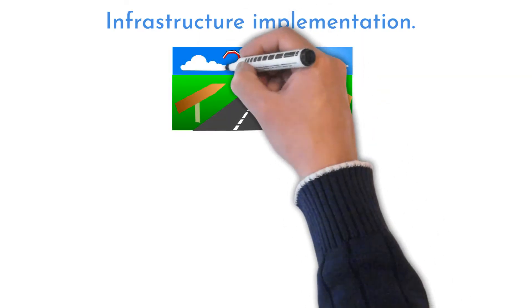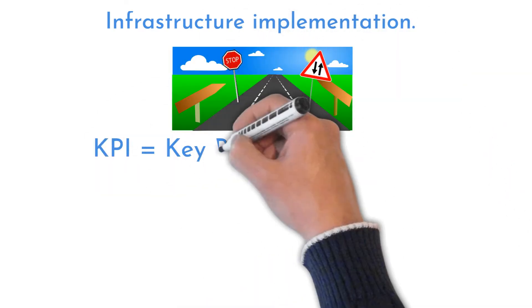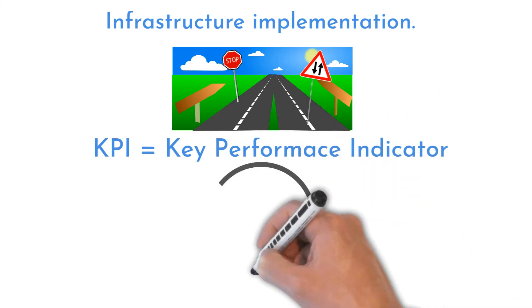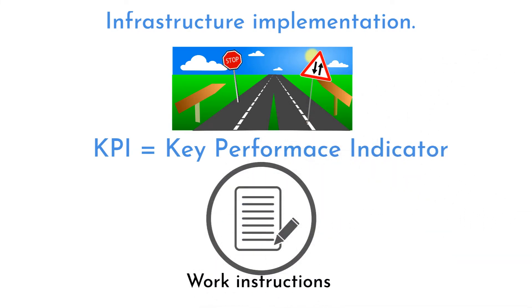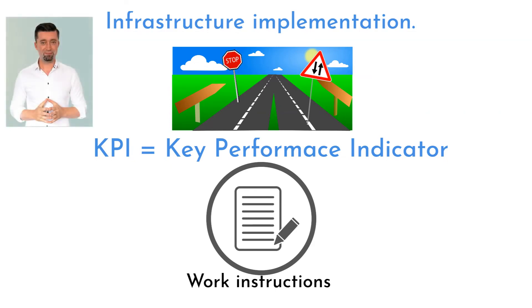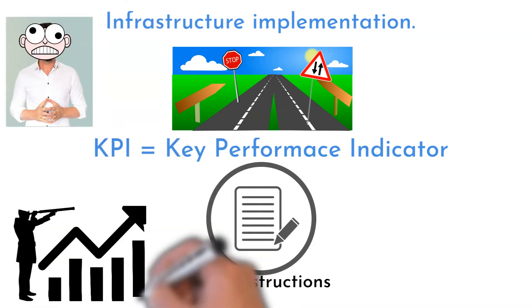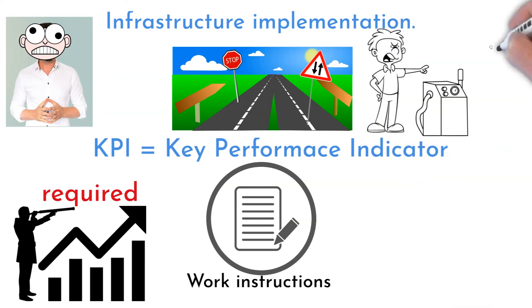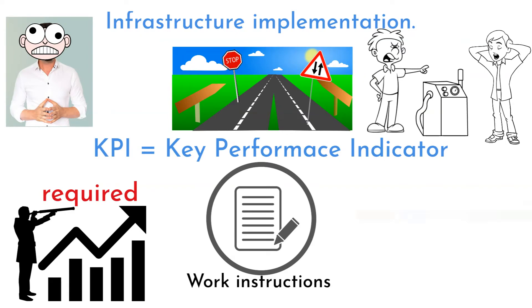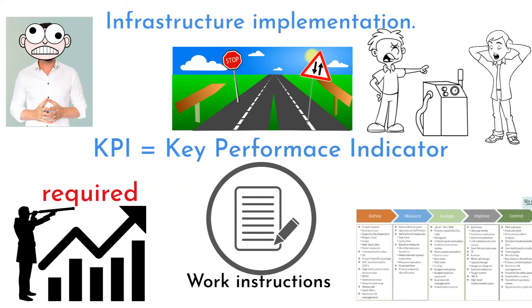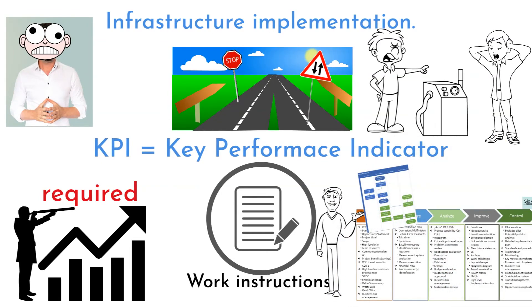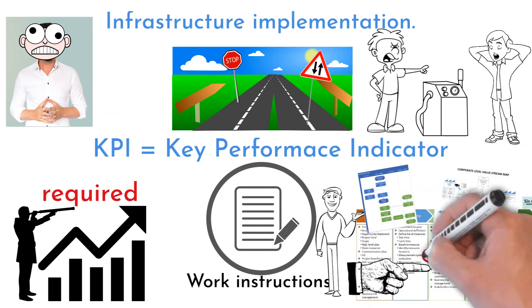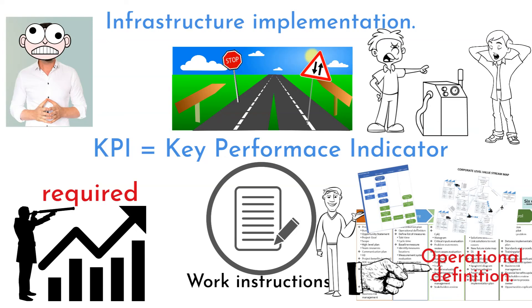The last project type is infrastructure implementation. It is about implementing measurement of KPIs and developing documentation describing the process. Personally, I have not used this project type, as there was always some process improvement required. I recommend using the DMAIC tool list when running infrastructure improvement — tools like process mapping, value stream mapping, and starting with an operational definition to understand what the real process deliverables should be.